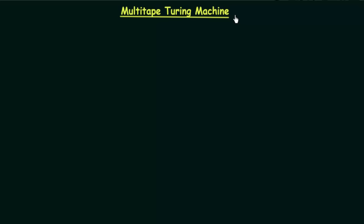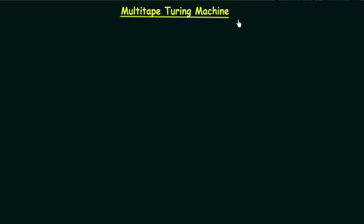In this lecture, we will be introducing a new kind of Turing machine called the multi-tape Turing machine, which means this Turing machine has more than one tape. We will see if this multi-tape Turing machine is more powerful than the single-tape Turing machine, or if they are the same in their power.